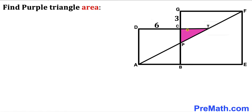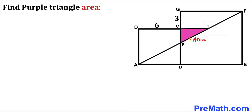Welcome to pre-math. In this video we have got this purple shaded triangle CPT fully confined in between the two squares, as you can see in this diagram, such that the side length of this smaller square is 6 units whereas this segment CG is 3 units. Our task is to calculate the area of this purple shaded triangle CPT.